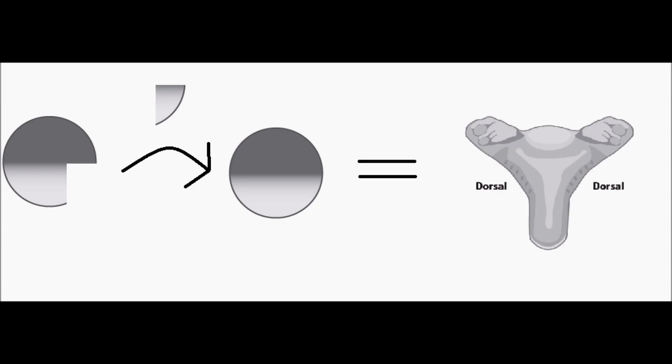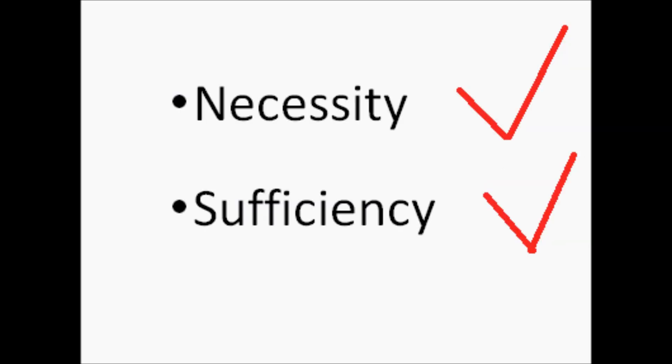Then, taking a part of the vegetal cortex from a newly fertilized egg and placing it into the ventral side of another egg will result in a secondary axis. This shows sufficiency.